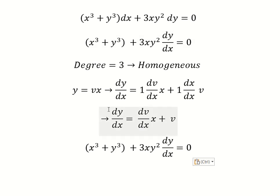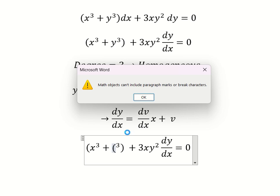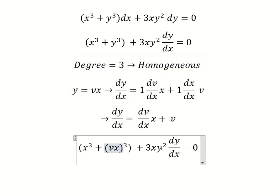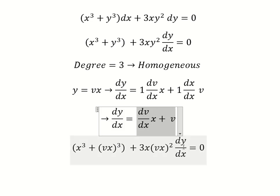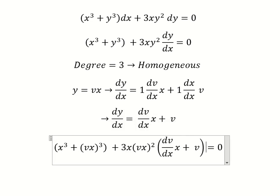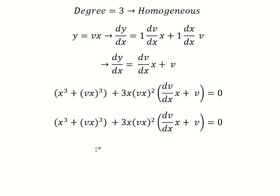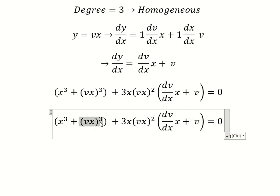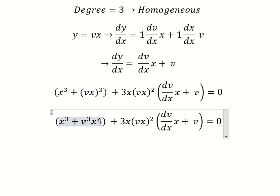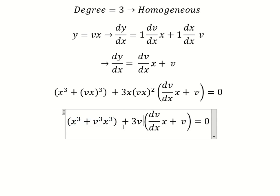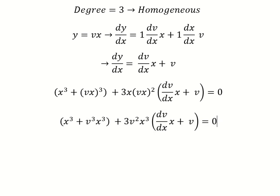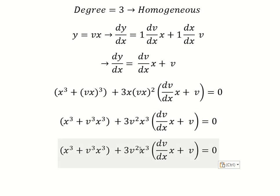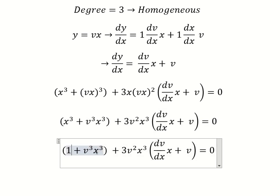I will substitute in the expression for y. After substitution we have v to the power of 3 times s to the power of 3, and v squared times s to the power of 3. Next, we divide both sides by s to the power of 3.